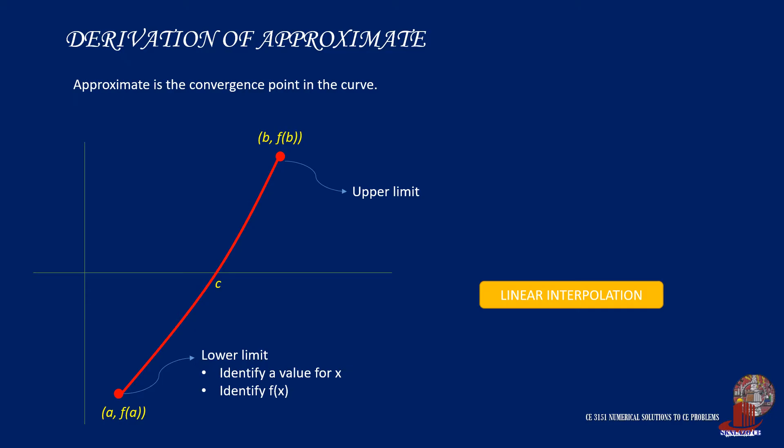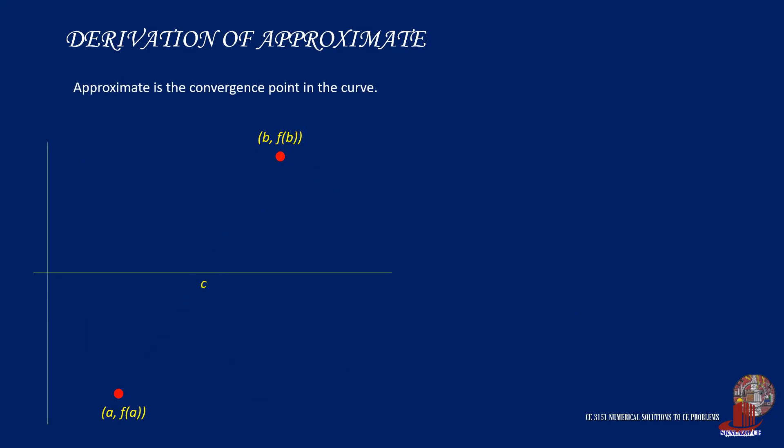In regula falsi, linear interpolation is utilized to approximate the value of c. When we connect the two points with a straight line, we can come up with the dimensions from the lower limit as the following. The upper limit dimensions would also be identified.